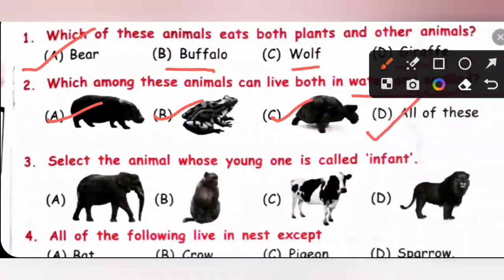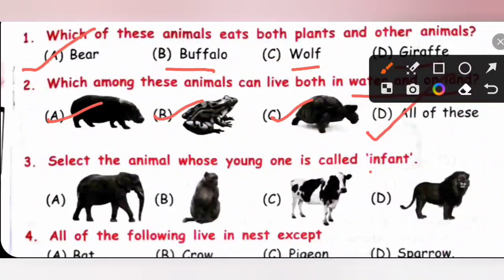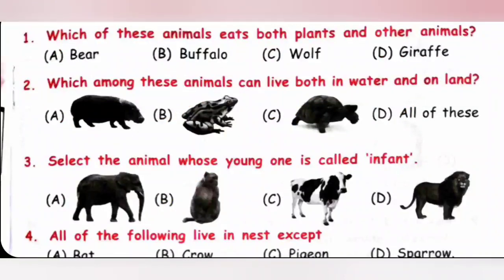Question 3: Select the animal whose young one is called an infant. The young one of an elephant is called a calf, the young one of a monkey is called an infant, and the young one of a lion is called a cub. So option B is the correct answer.